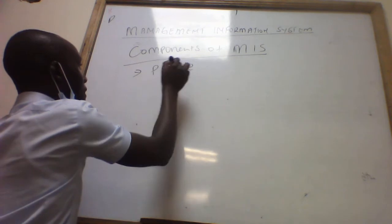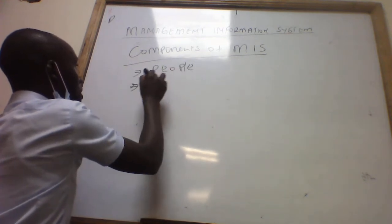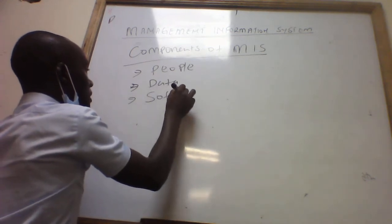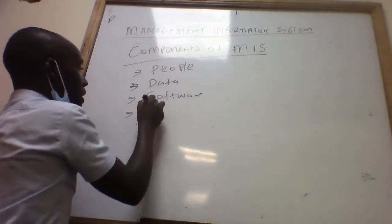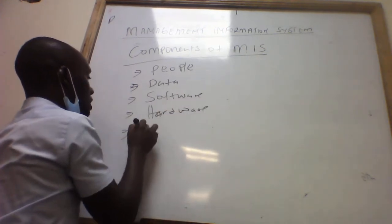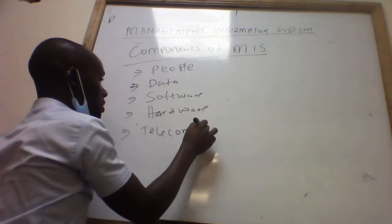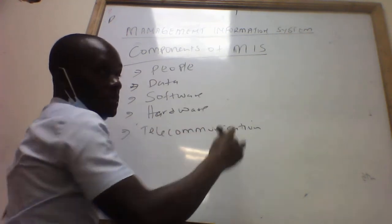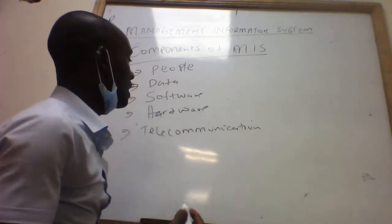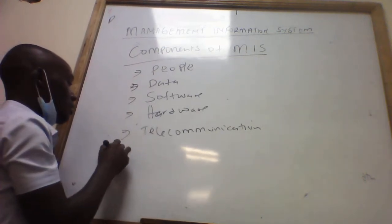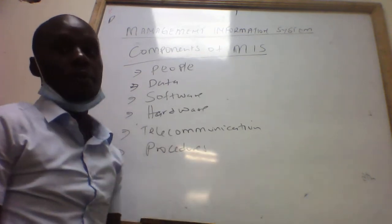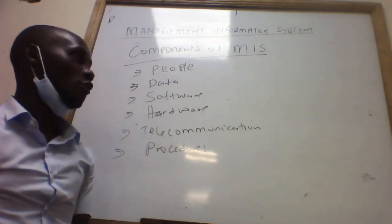Component two is data. Then we have software, hardware, and telecommunication — which is the same as network. We can also add procedures, making six components in total. So these are what makes up what we call an information system.